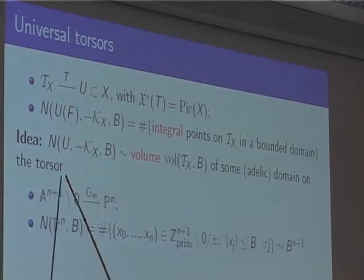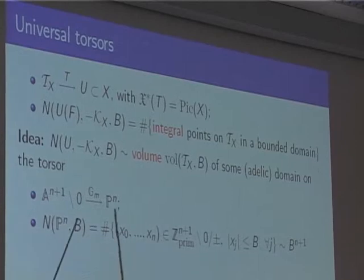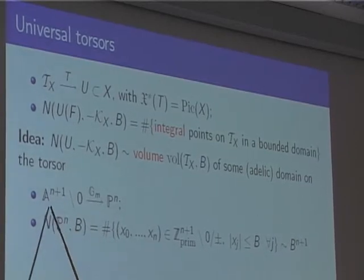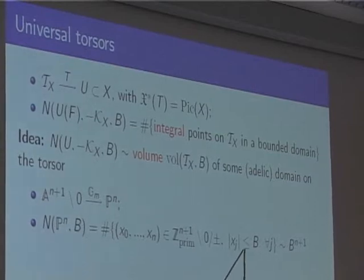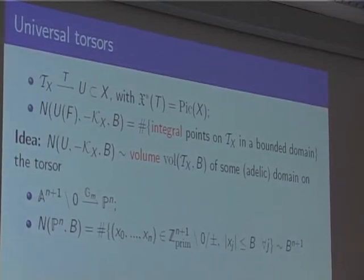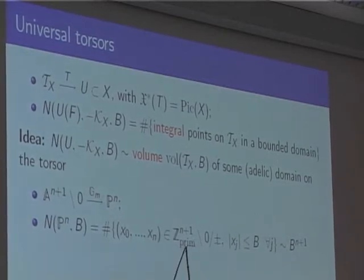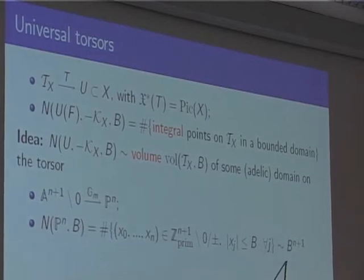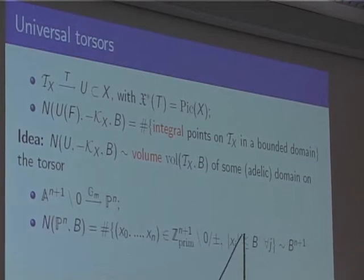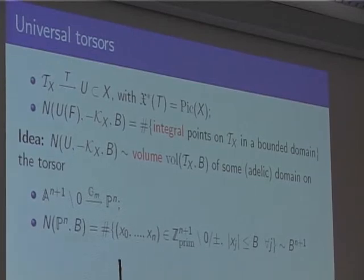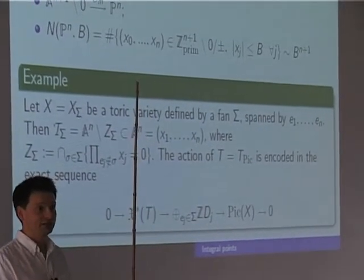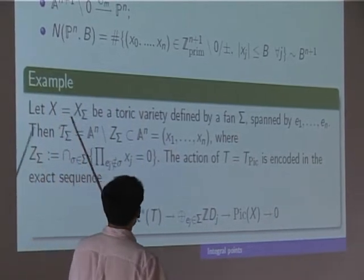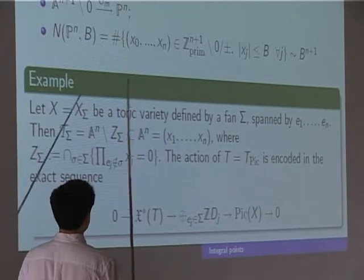The basic example is P^n: rational points on P^n become integral points on A^{n+1}, the domain on the torsor is given by the height inequality, and the count is B^{n+1} times 1/ζ(n+1), giving a constant. Another supply of varieties is toric varieties: the fan is spanned by vectors e₁, …, eₙ in the lattice N, and the universal torsor turns out to be a subset of affine space A^N, where N is the number of generators of one-dimensional cones in the fan, minus a closed subvariety.